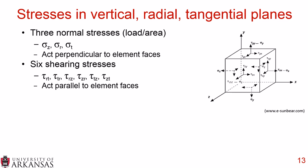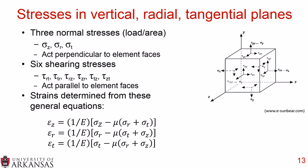If we can quantify these normal stresses and shearing stresses, we can calculate the strains that are generated. Strains in pavements are a very good way to move toward understanding pavement behavior. The strains are calculated using both the normal stresses, the shearing stresses, and also the elastic modulus and the Poisson's ratio. We can build on these general equations — there are literally dozens of equations available in the multilayered elastic system analysis.